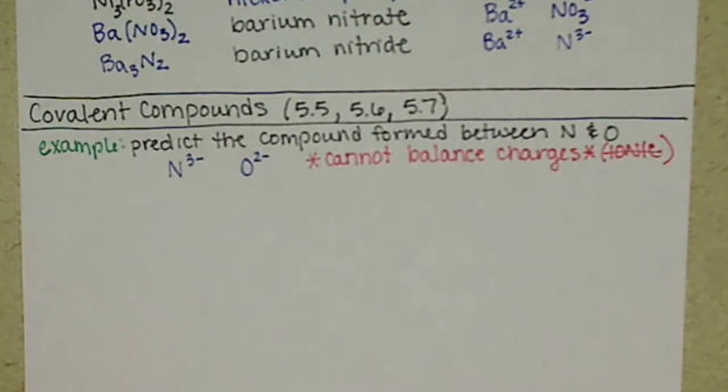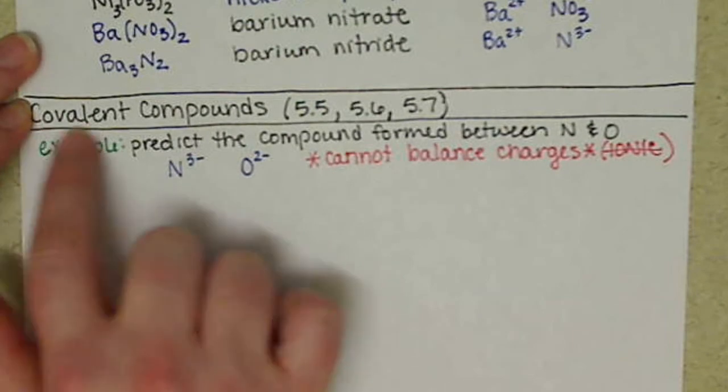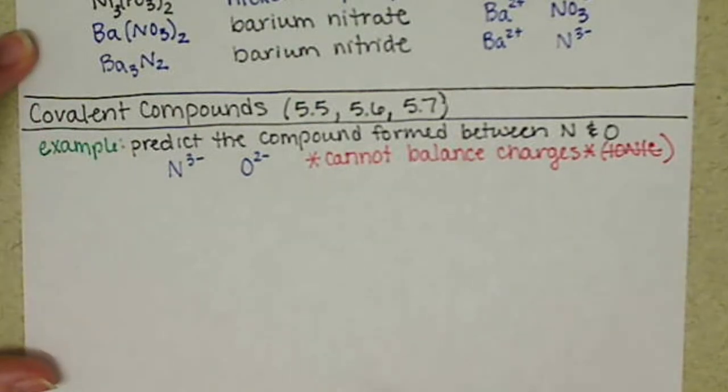Now, when we share electrons, there's a lot of different ways that we can share electrons. So covalent compounds don't have a fixed formula like ionic compounds do. Ionic compounds, we had to balance the charges. So our formulas and our subscripts were fixed. We couldn't change those. Whenever we had two atoms or two ions coming together, they had a certain formula.